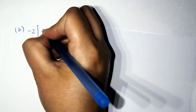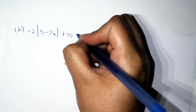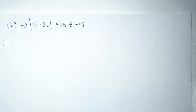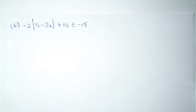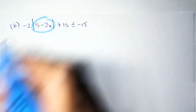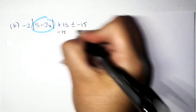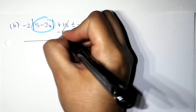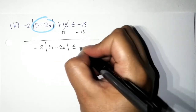Problem B: negative 2 times the absolute value of (5 − 2x) plus 15 is less than or equal to −15. We have an absolute value inequality. Primary goal: isolate the absolute value. Subtract 15 from both sides, giving −2 times the absolute value of (5 − 2x) is less than or equal to −30.